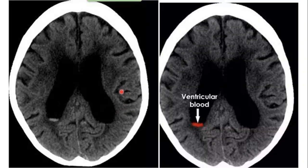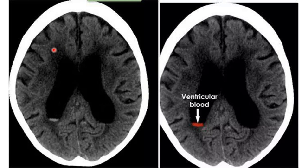Here we see several findings. The cerebral sulci are prominent bilaterally, indicating diffuse brain atrophy — most likely an elderly patient. There is an irregular hypodense area of the white matter in the periventricular distribution around the anterior horns of the lateral ventricle, indicating periventricular small vessel disease. Looking carefully, there is a fluid level — a hematocrit level — indicating intraventricular blood with sedimentation of red blood cells in the posterior part of the ventricle.